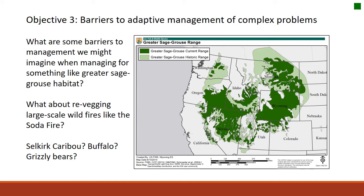The third objective Chad and Tony address is barriers to adaptive management of complex problems. On the right is a map of the greater sage grouse habitat range in western North America — the dark green is their current range, the light green their historic range. When we look at this current range and ask what barriers to management we might face for greater sage grouse habitat, we see it spans 11 or 12 states. All of a sudden, managing for greater sage grouse habitat requires getting 11 states into the conversation.